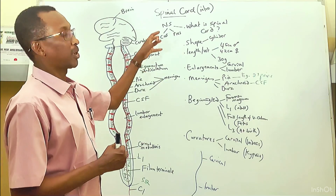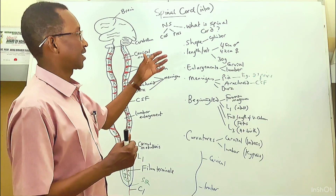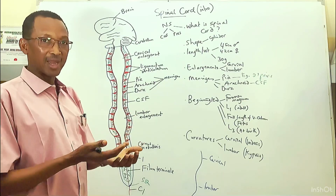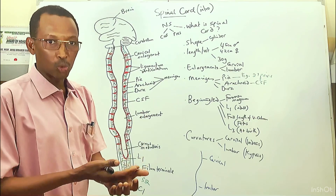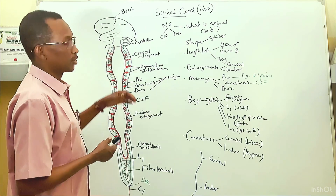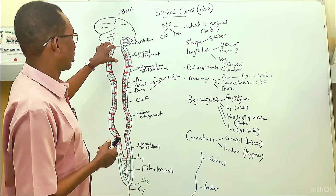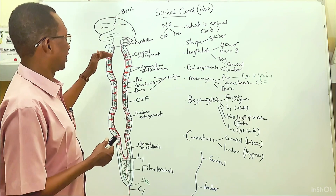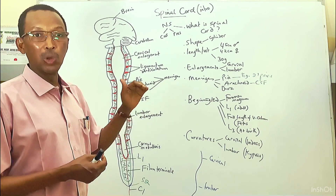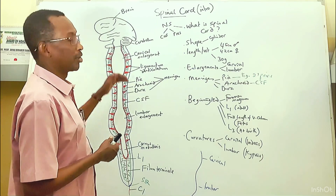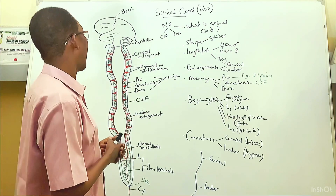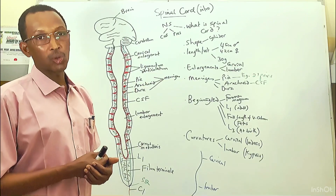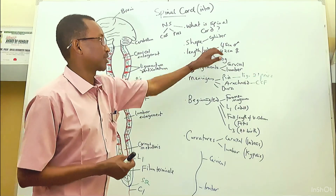The spinal cord is slender-like and it begins from the foramen magnum. The cranium has a very large hole at its base known as the foramen magnum, and it is through that foramen that the spinal cord passes. The spinal cord begins immediately below the foramen magnum and at the upper border of the atlas, that is the first cervical vertebral bone.